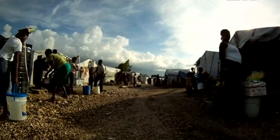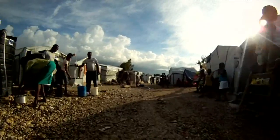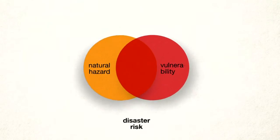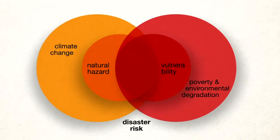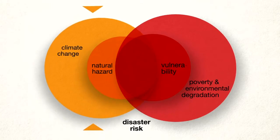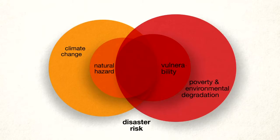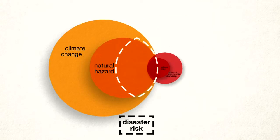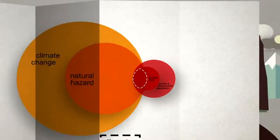This is why disasters are essentially development failures. Reducing hazards like climate extremes and seismic activities is highly important but very often impossible. Reducing vulnerability, on the other hand, offers a wide array of possibilities for reducing disaster risk and thereby improving the resilience of households, communities and nations.